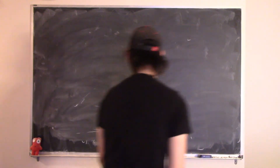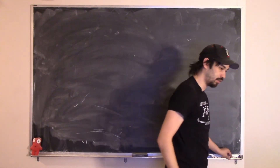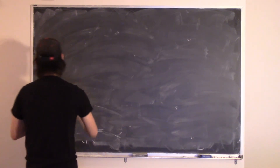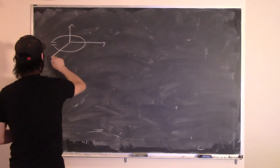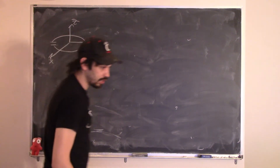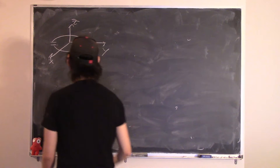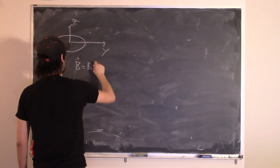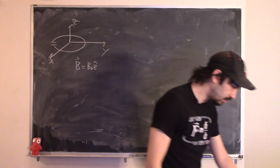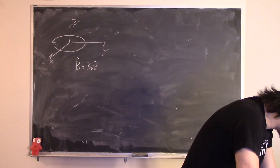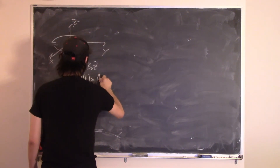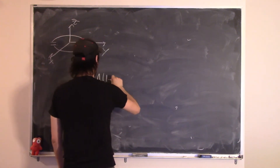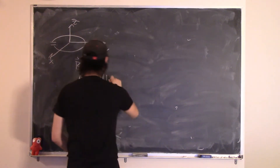This problem has a loop of wire in the x-y plane. The magnetic field is B = B0 z-hat. The loop expands so that the area as a function of time is A(t) = A0 times (1 + gamma t). We want to find the charge on the capacitor as a function of time.